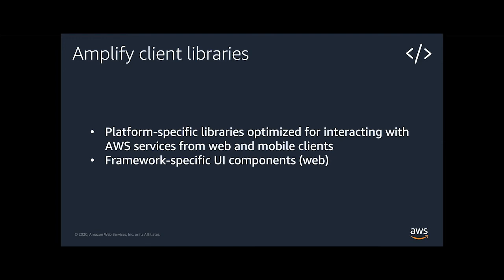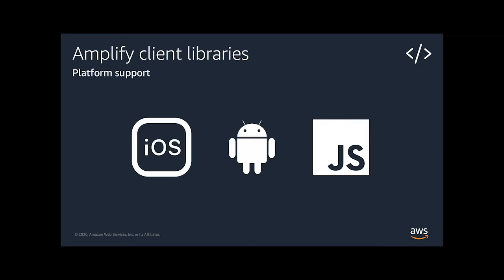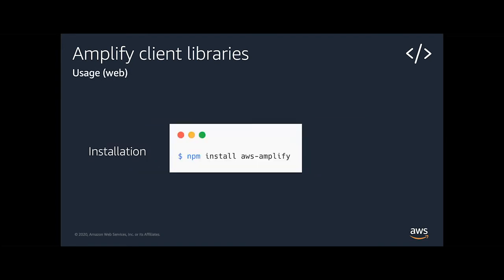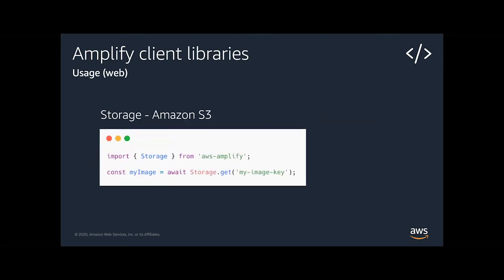The client libraries are platform-specific libraries optimized for interacting with AWS services from web and mobile apps. We have client library support for iOS, Android, JavaScript, and now Flutter. For usage, you install the client libraries, import an API from them — for instance the storage API to interact with S3 — and then interact with the service using put, get, or list. So storage.put creates a new item, storage.get retrieves it, and storage.list lists everything in a bucket.